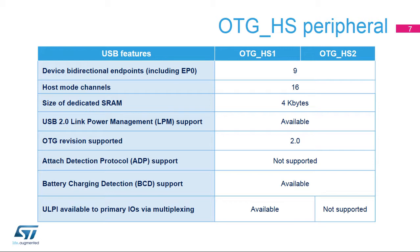As already highlighted, both instances have a dedicated 4-kilobyte RAM for FIFO, support link power management, OTG mode, and battery charging management. But only OTG-HS1 can connect using an external USB-PHY via the ULPI hardware interface to work in high-speed mode.